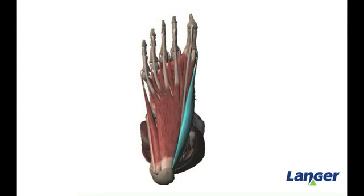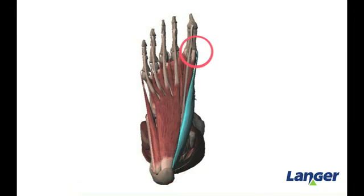Medial to the flexor digitorum brevis is the abductor hallucus. The abductor hallucus originates on the medial process of the calcaneus and inserts medially at the base of the proximal phalanx. The function of the abductor hallucus is to flex and abduct the great toe.